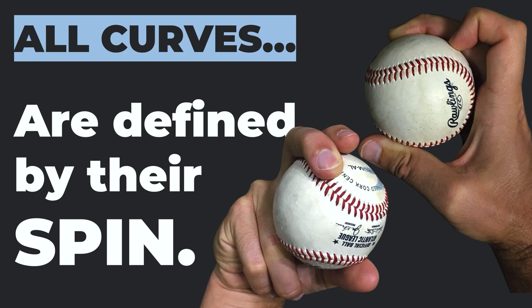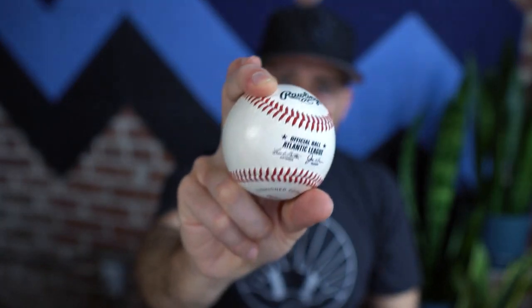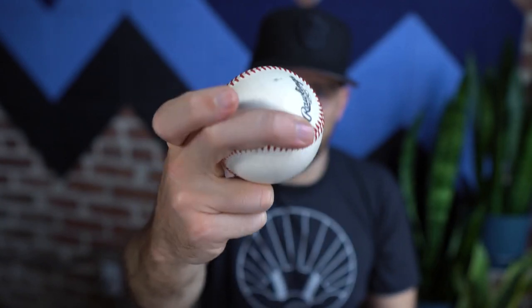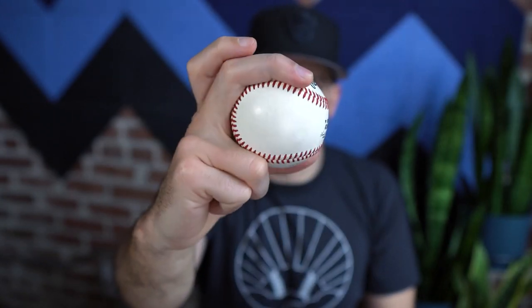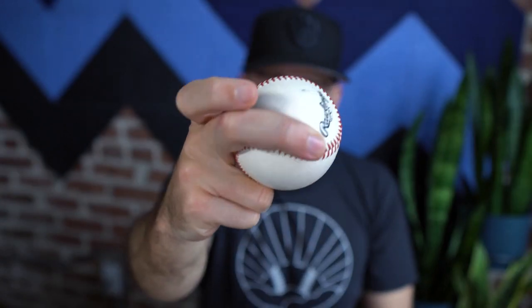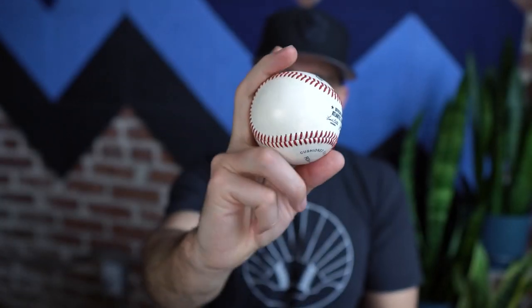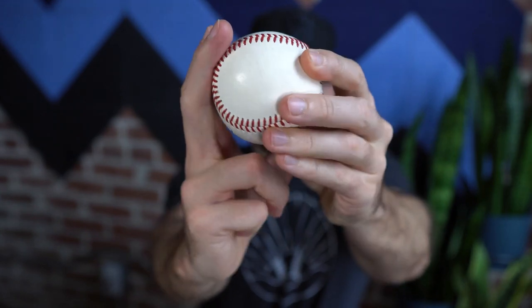Whether you throw a knuckle curve or use some other finger placement, it doesn't really make a difference. This index finger is your placeholder finger, because we want the middle finger to impart the most force in spinning the ball forward when coming over the top. If you look at high-speed video, you're not going to release the pitch exactly like you think — you mentally think one thing, but you're going to get around the pitch as it releases from your fingers.